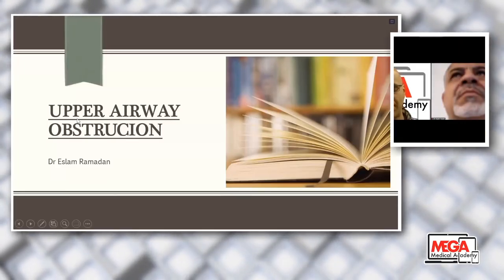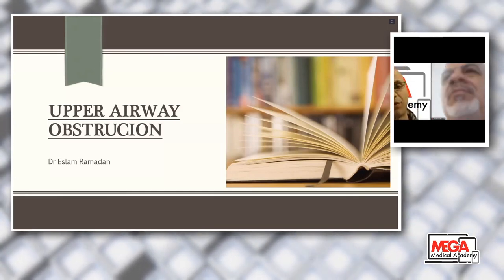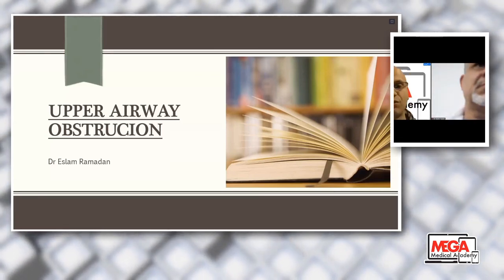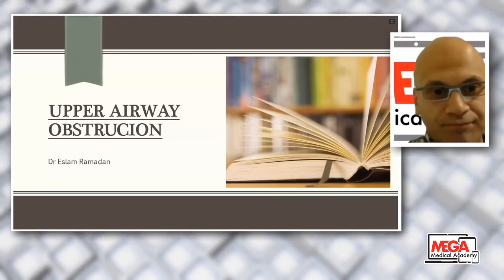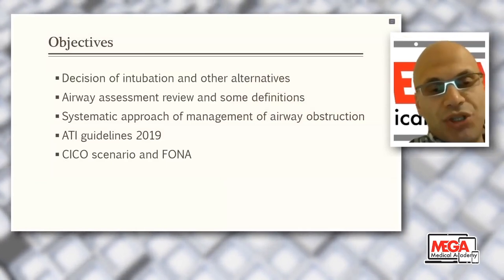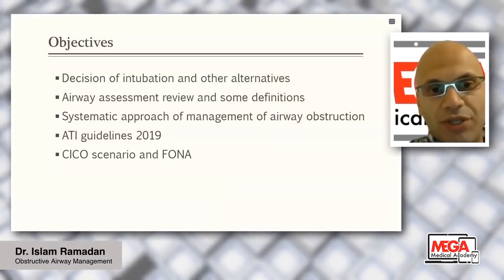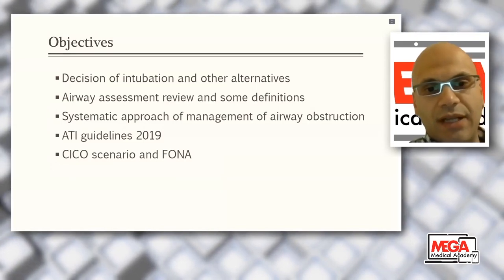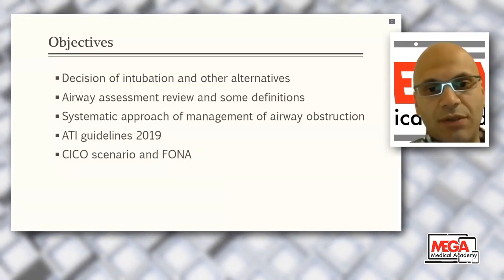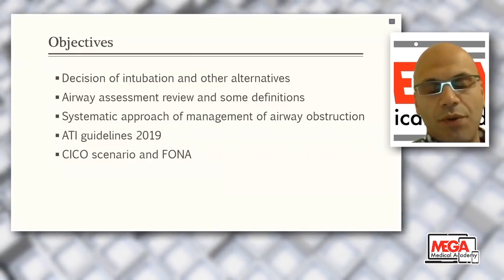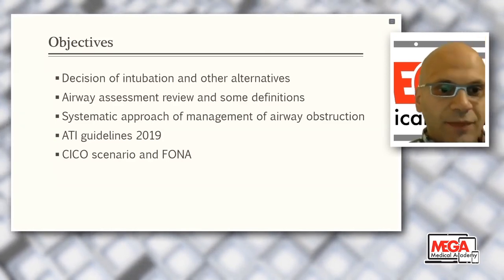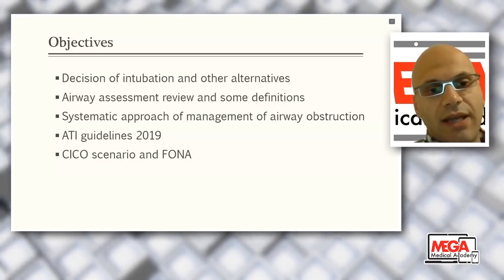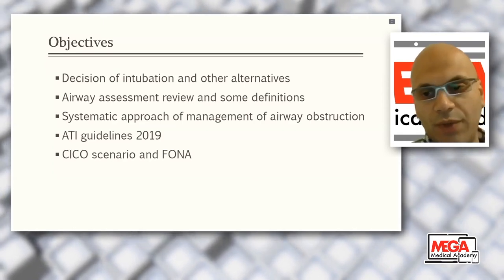Our lecture today is a hot topic: management of upper airway obstruction. It's a hot topic during exams and also in clinical practice. The objectives will cover decisions on when and how to intubate for upper airway obstruction and alternatives. We'll do a quick assessment review, some definitions, and a systematic approach of management through a case scenario. At the end, we'll briefly discuss the 2019 guidelines for awake tracheal intubation, the can't intubate can't oxygenate scenario, and front of neck airway access.